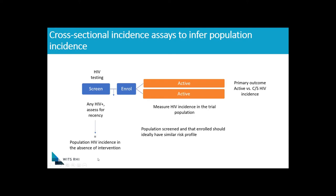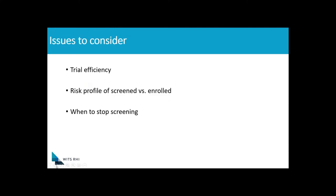There are a couple of important things to consider with this new approach. I think there are three key issues that as clinical trialists we need to think about. The first is trial efficiency. The second is some thoughts around the risk profile of the population screened versus that enrolled. And the third consideration is really around when and how to stop screening.